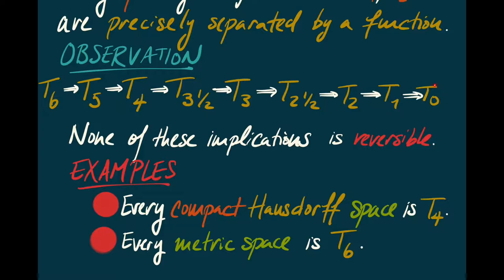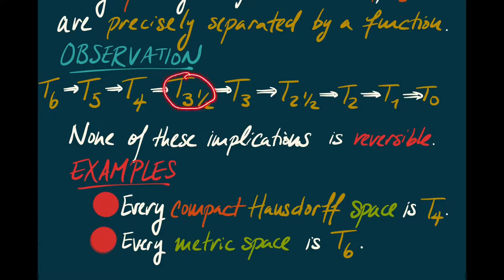What's more important is which conditions are most relevant for our work. In my experience, the most relevant have been: T0 — a minimal condition roughly saying that if two points have distance 0 they're actually equal; T1 — which guarantees that points are closed; Hausdorffness; T3½, for reasons I'll describe in a moment; and T4, for other reasons. I don't know any interesting examples of T2½ spaces that are not T3, for example.